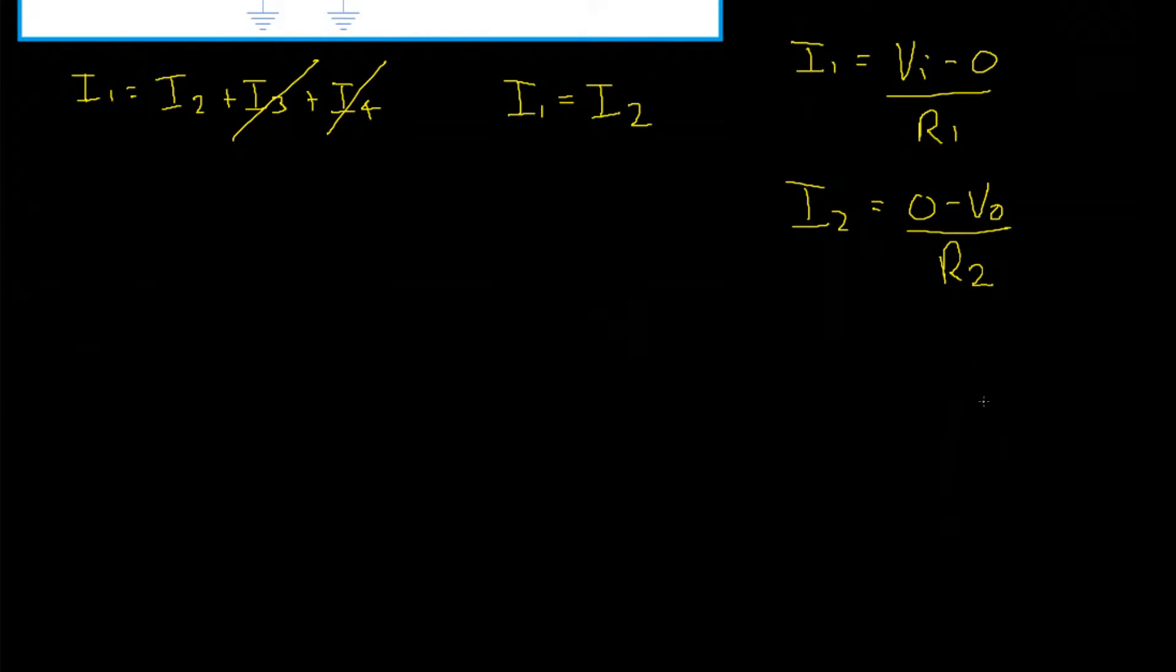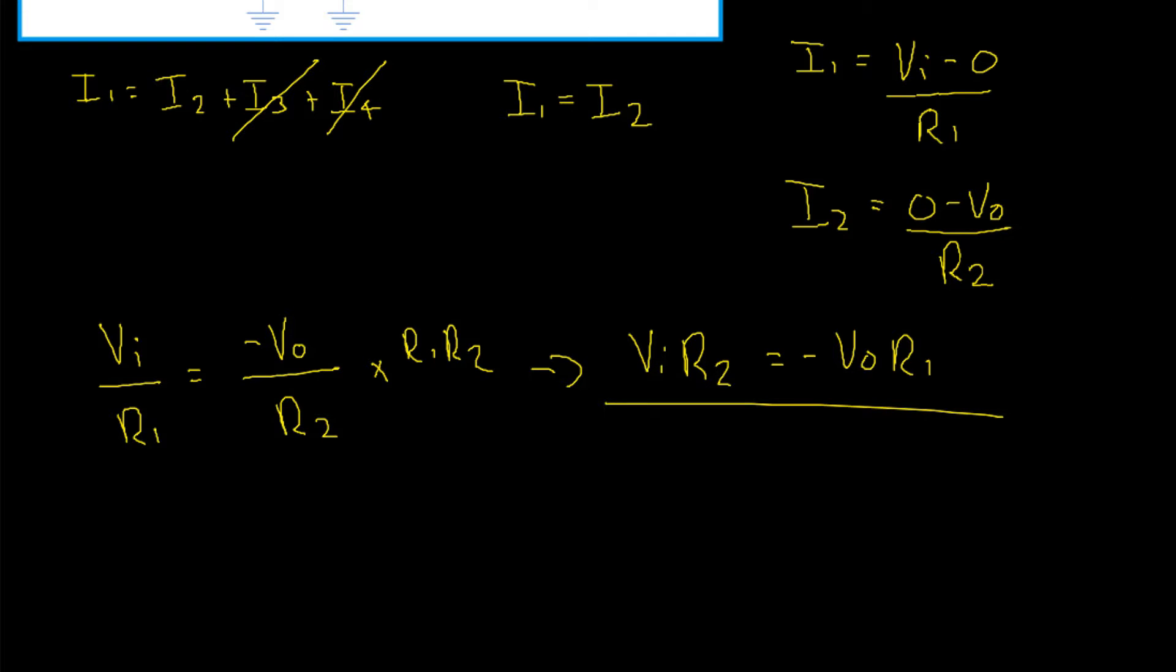Let's now set those equal to one another and solve for Vout divided by Vin. We have I1, which is simply VI divided by R1. We can omit the 0 divided by R1 since that is simply 0, equals the 0 we can drop again, minus VO divided by R2. Now let's remove those denominators by multiplying through by R1 R2. That gives us VI, the R1s cancel and we are left with R2 equals negative VO, the R2s cancel and we are left with R1.